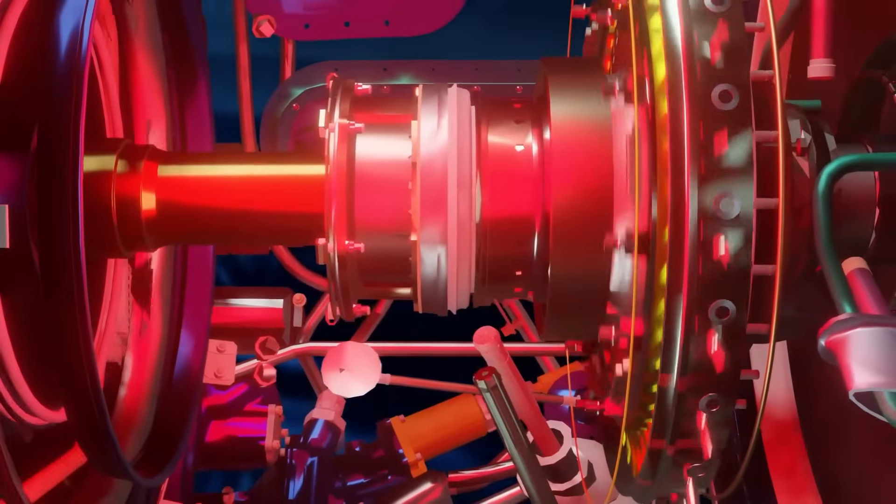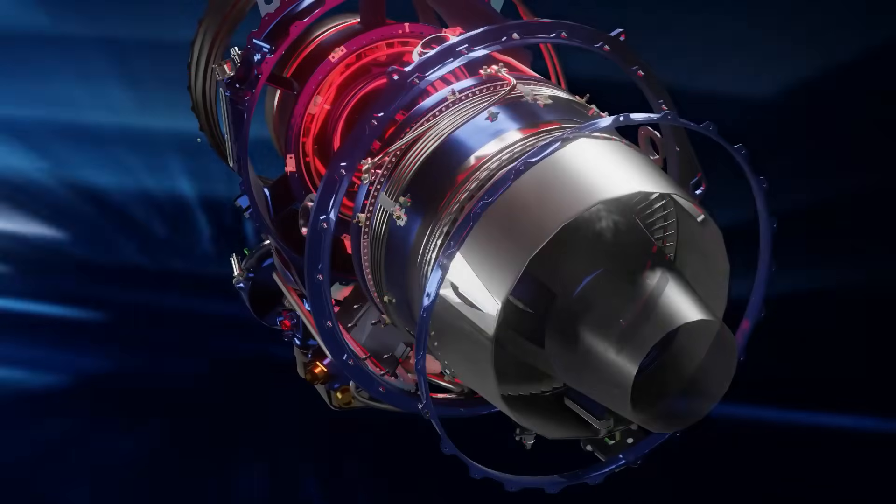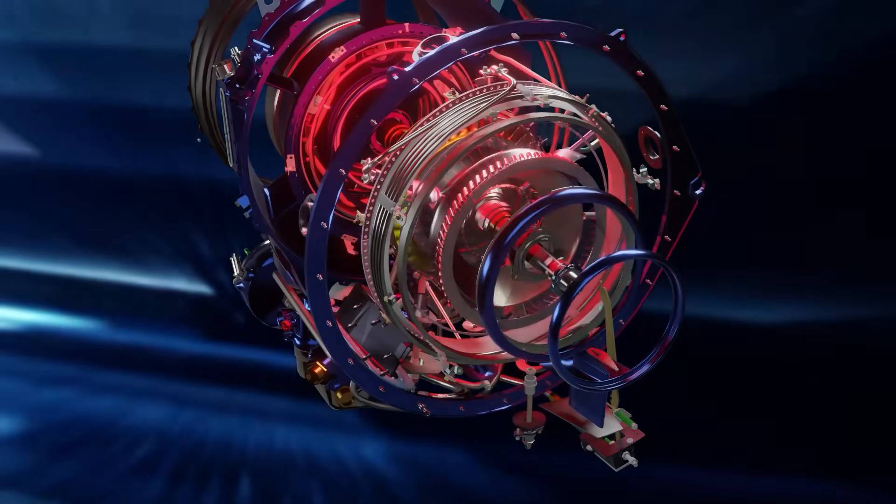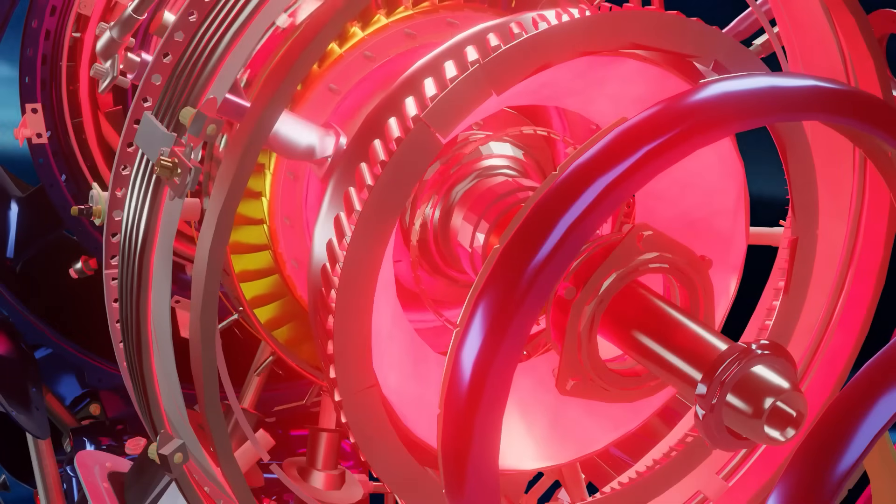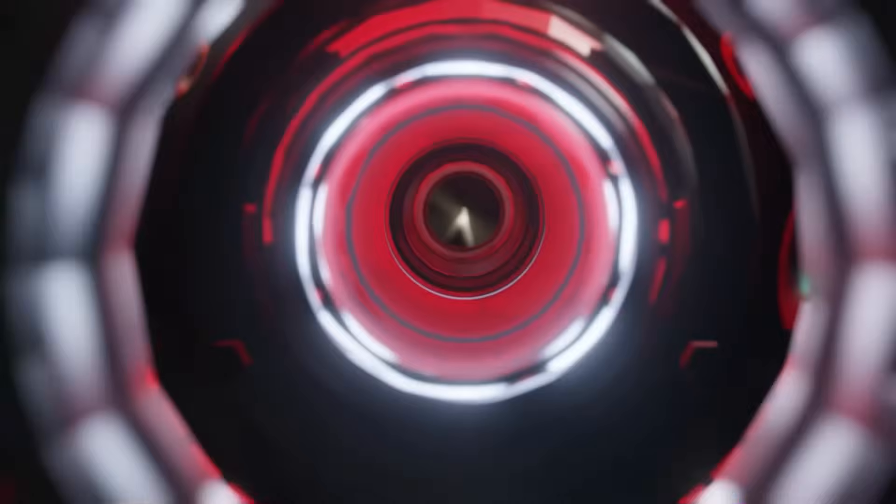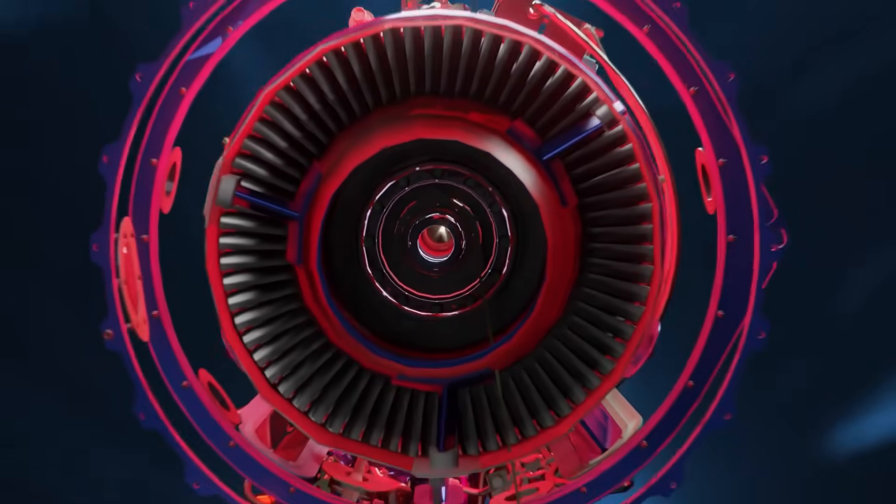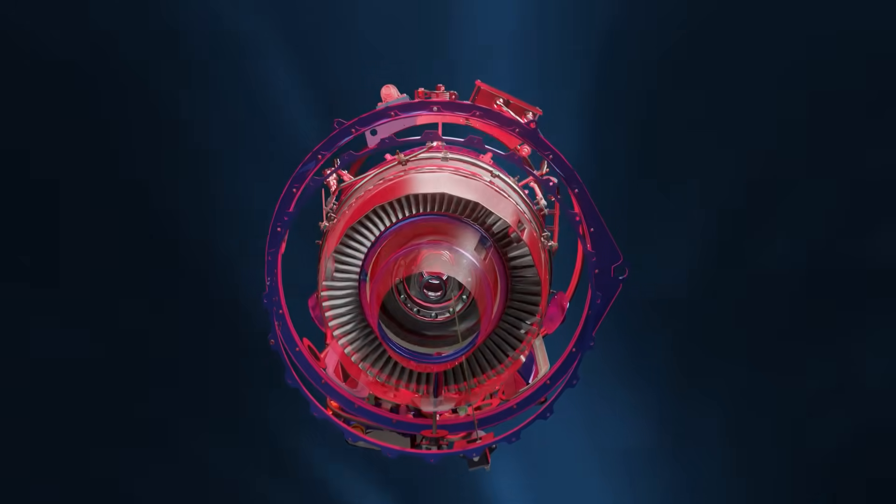As the hot gas stream leaves the combustor, it passes through the turbine. The turbine is connected to the same shaft as the compressor so they rotate together as one piece. The turbine extracts a lot of power from the hot gas stream to turn the compressors while they squeeze the air and raise the pressure.